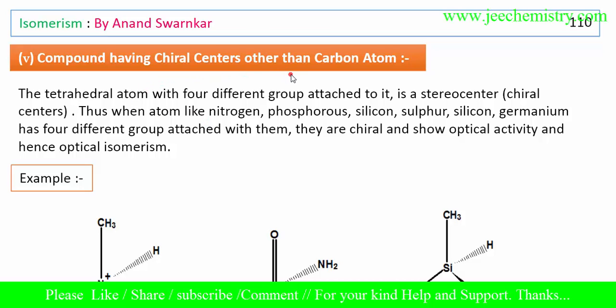Compounds can have chiral centers other than carbon atoms. Until now we have studied that compounds having four different groups attached to an atom are chiral in the absence of symmetry. If this carbon atom has a, b, c, d four different groups present, then this carbon will be chiral.